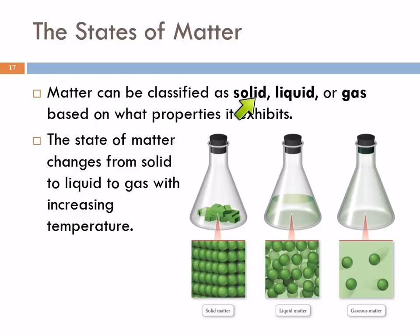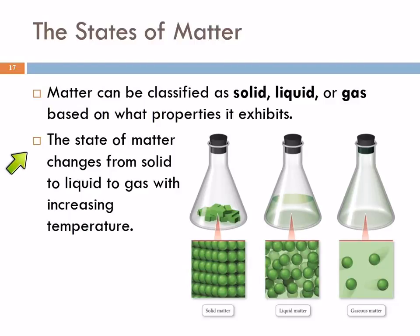We will talk about three states of matter: solid, liquid, and gas. There is a fourth state called a plasma — we're not going to talk about plasmas in this class. The state of matter changes based on the temperature of the matter. We can go from a solid to a liquid by raising the temperature.